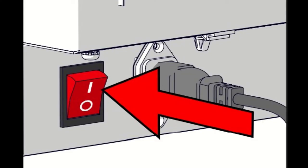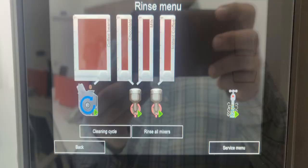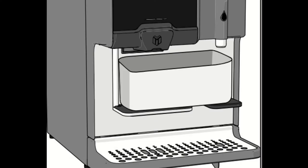Turn the machine on. Place the container under the coffee spout. In the rinse menu, start the espresso brewer cleaning cycle and follow the on-screen instructions.